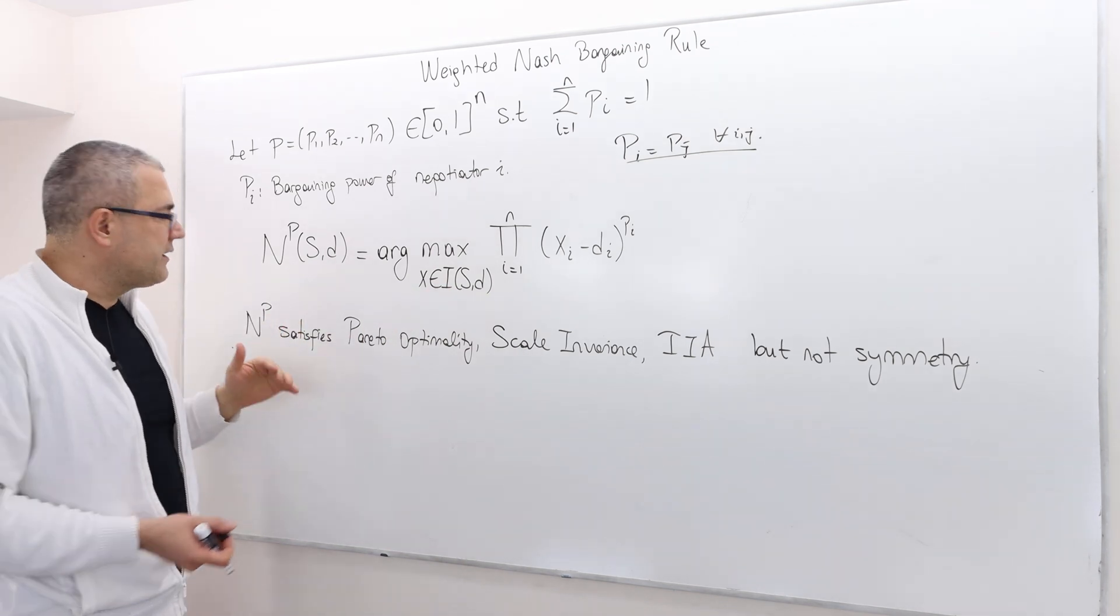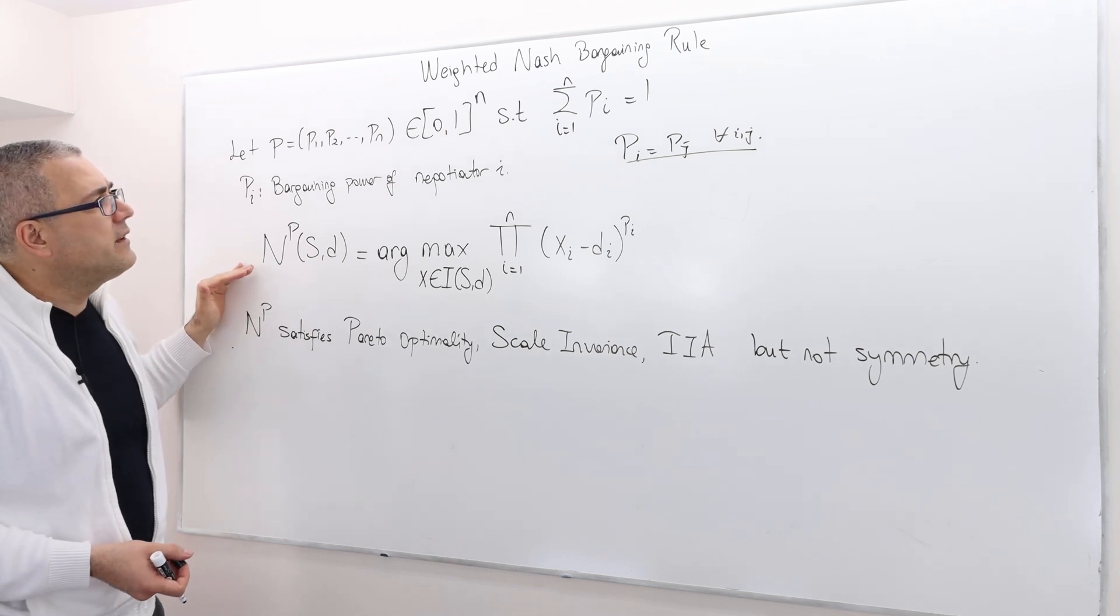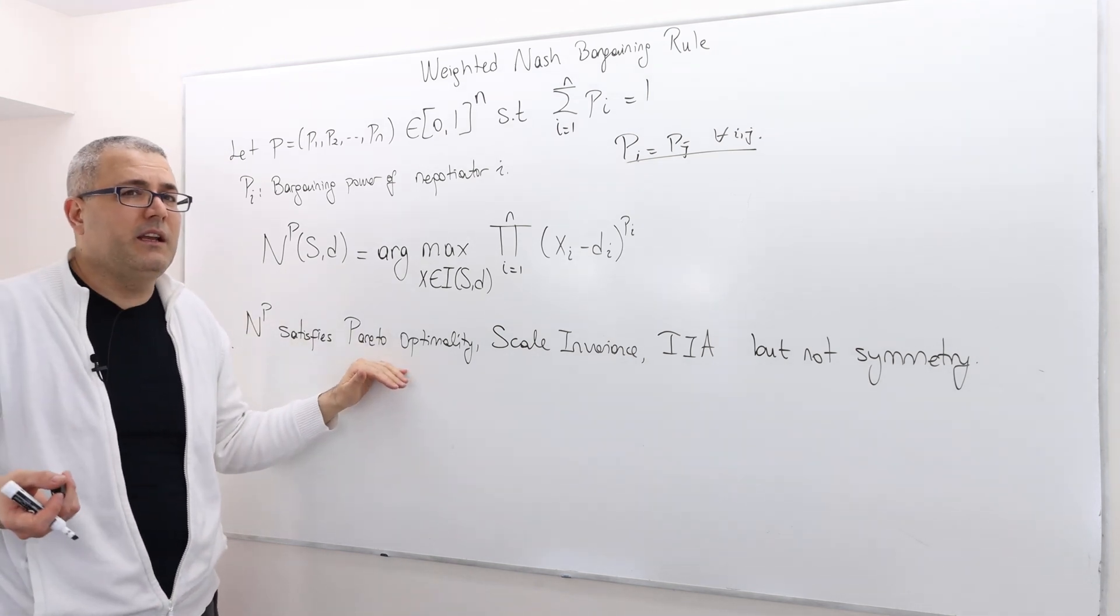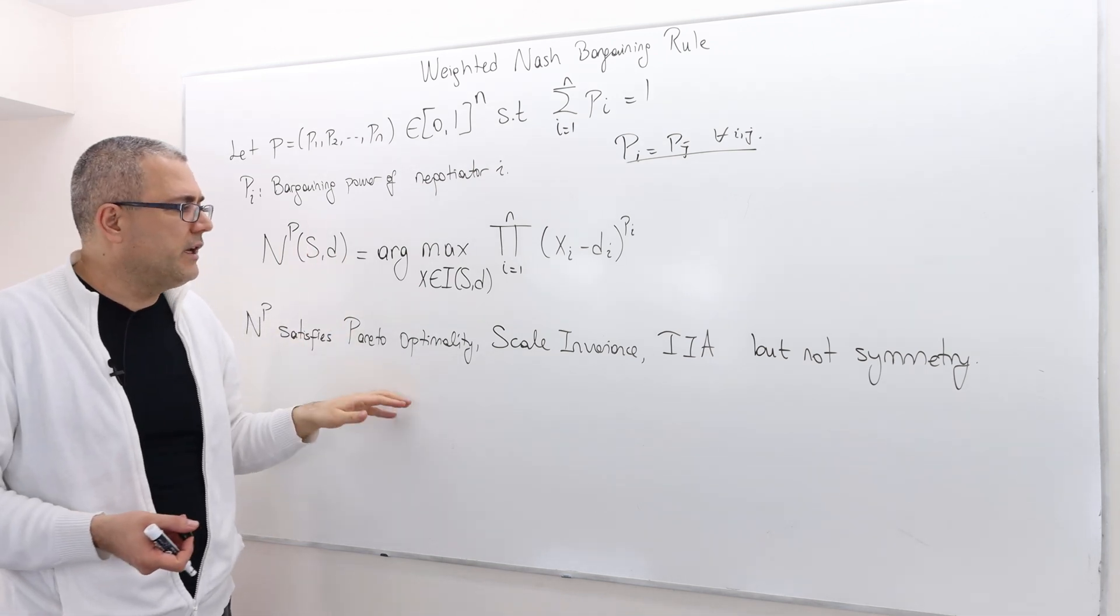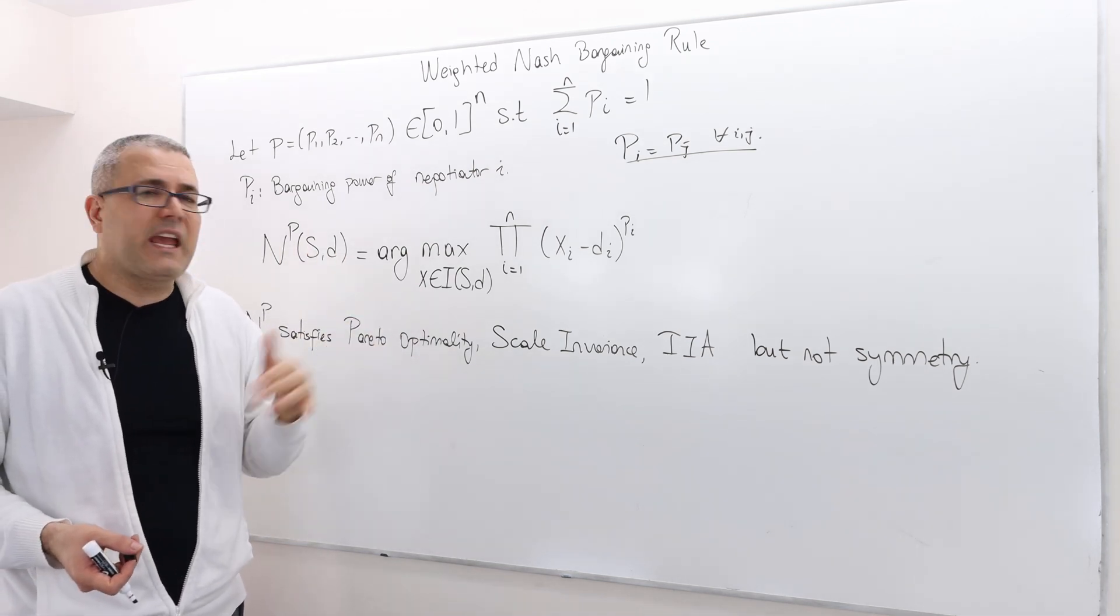As you may predict, the weighted Nash bargaining rule satisfies Pareto-optimality. All right. It's always going to give us some point on the boundary. It satisfies scale invariance.